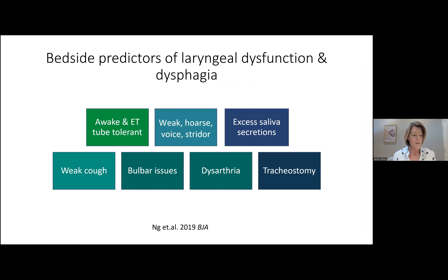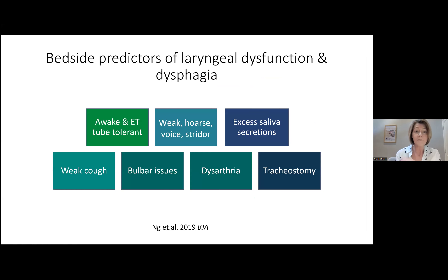From a bedside perspective, key signs to look for include: patients who are awake and tube-tolerant; weak or hoarse voice; altered voice quality; stridor; excess secretions; weak cough; vocal cord issues; dysarthric speech; and having a tracheostomy. If you're looking for a quick checklist to help identify at-risk patients on the ward, these are the features to keep in mind.